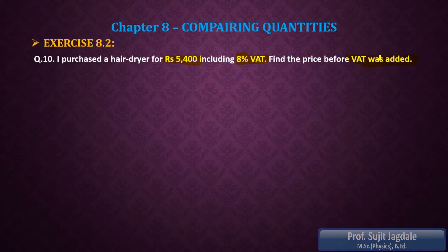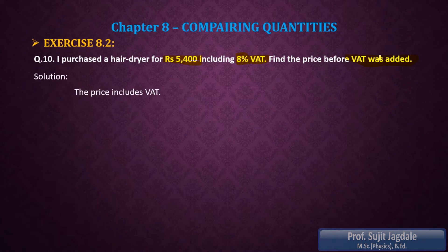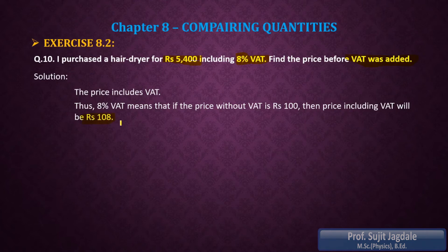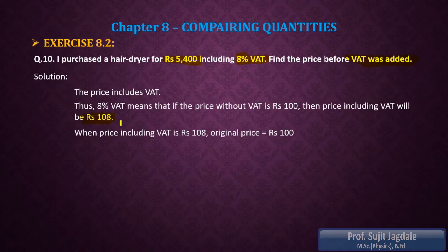So find the price before VAT was added. That means here you have to find out the marked price, and on that you have to find out the 8% VAT. The price including VAT is Rs 5400. If I consider a regular base amount — price without VAT is Rs 100 — then when I add 8% VAT to that Rs 100, the price including VAT is going to be Rs 108.